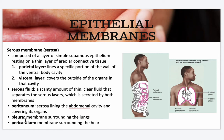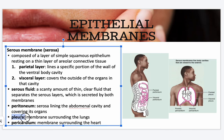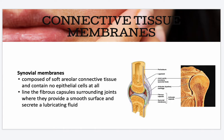The pleura is the membrane surrounding the lungs. Your pericardium refers to the cardiac membrane surrounding the heart. Synovial membranes are composed of soft areolar connective tissue and contain no epithelial cells at all. They line the fibrous capsules surrounding your joints, where they provide a smooth surface and secrete a lubricating fluid.